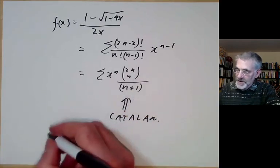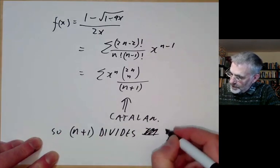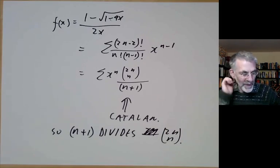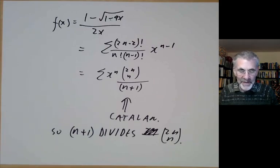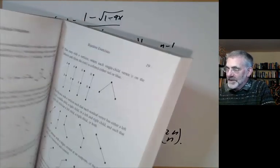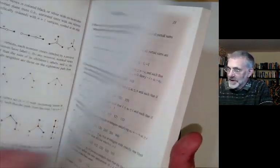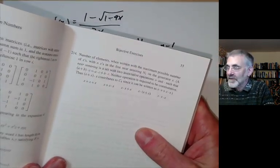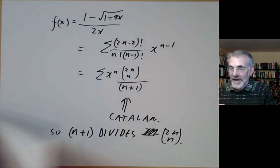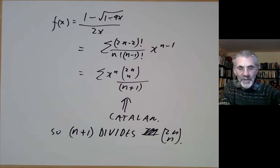Since the Catalan numbers are integers, we see that n+1 divides C(2n, n). The Catalan numbers also count various sorts of binary trees and ways of subdividing polygons into triangles. Richard Stanley wrote a book listing all the different sets counted by Catalan numbers — he found 214 different interpretations, and doubtless more have been found since. Catalan numbers really do turn up rather often. That will be all for this lecture.